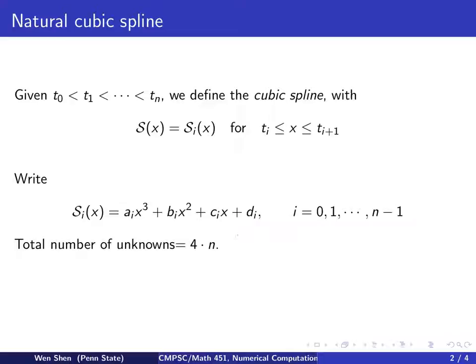So let's do a count. For each i, I have four unknowns. And how many intervals do I have? i runs from 0, 1, all the way to n minus 1. So there are n intervals. The total number of unknowns is 4 times n.